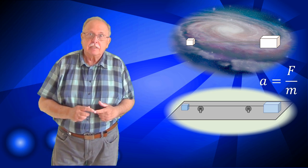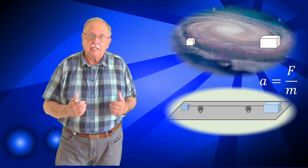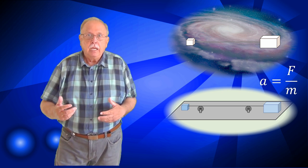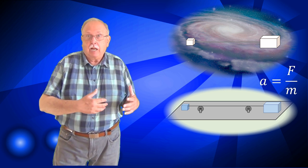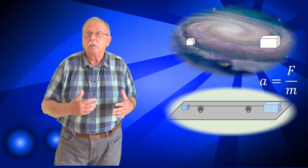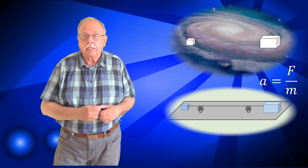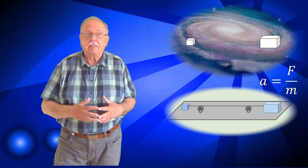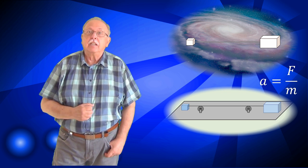Dar acum să ne gândim la sistemul din întrebarea noastră. Acolo aveam scripeți. I-am pus ca să avem repere pentru mișcare. Să presupunem că distanțele de la corpuri la scripeți sunt inițial egale. Deoarece corpurile, odată puse în mișcare, se mișcă din inerție, amândouă vor ajunge la scripeți, dar cu viteze diferite și nu simultan. Primul va ajunge corpul mai ușor, apoi corpul mai greu. Așa că, în sistemul nostru, cele două corpuri vor ajunge amândouă la scripeți, vor parcurge aceeași distanță, dar cu viteze diferite.